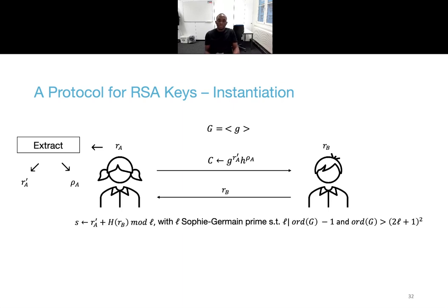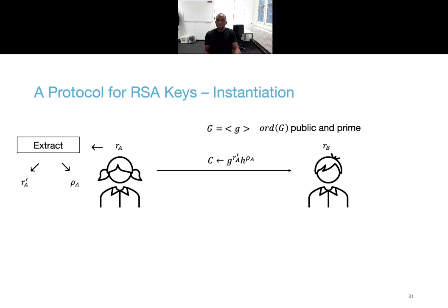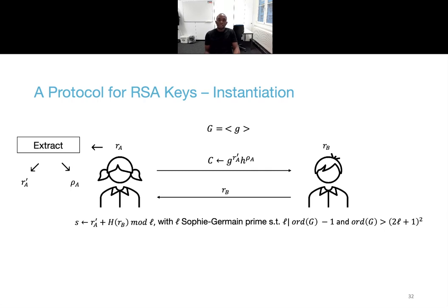The instantiation involves a group G of public prime order P and Pedersen schemes to commit to Alice's randomness. To extract a seed S, Alice hashes Bob's randomness and adds it to hers modulo a Sophie-Germain prime L. This prime L must divide the order of G minus one. The reason is that the PRF used to generate primes is the Dodis-Yampolsky PRF in the group of quadratic residues modulo 2L plus one and with a base A. Since P and Q are generated in G, the order L of A must then divide the order of G minus one as A generates a subgroup of Z order of G star. The order of G must also be larger than 2L plus one squared to be sure that N is really the product of P and Q as integers and that there was no modular reduction.